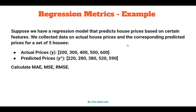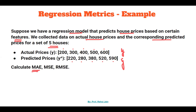To understand how to calculate and interpret these metrics, let's use the following example. We have a regression model that predicts house prices based on certain features, and we collected data on actual house prices and corresponding predicted prices for five houses. The actual prices are $200, $300, $400, $500, and $600. The predicted prices were $220, $280, $380, $520, and $590.